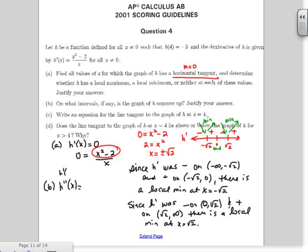The easiest thing to do would be to look at h prime of x and bring the x into both pieces. So I'd have x squared over x, so x minus 2 over x, so 2x to the negative 1. So then I can very quickly take the second derivative which is 1 minus negative 2x to the negative 2. So 1 plus 2 over x squared.